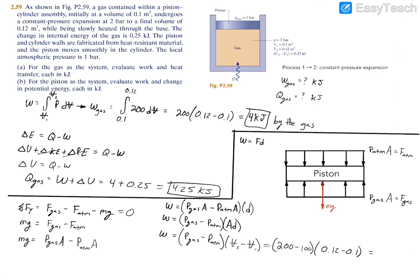Plugging in the numbers: the gas pressure is 200 kilopascals minus atmospheric pressure of 100 kilopascals, times the volume change of 0.12 minus 0.1, giving 2 kilojoules. That 2 kilojoules is work done on the piston because we had to overcome the piston's weight to move it upward. Therefore, the work done by the piston is negative 2 kilojoules.